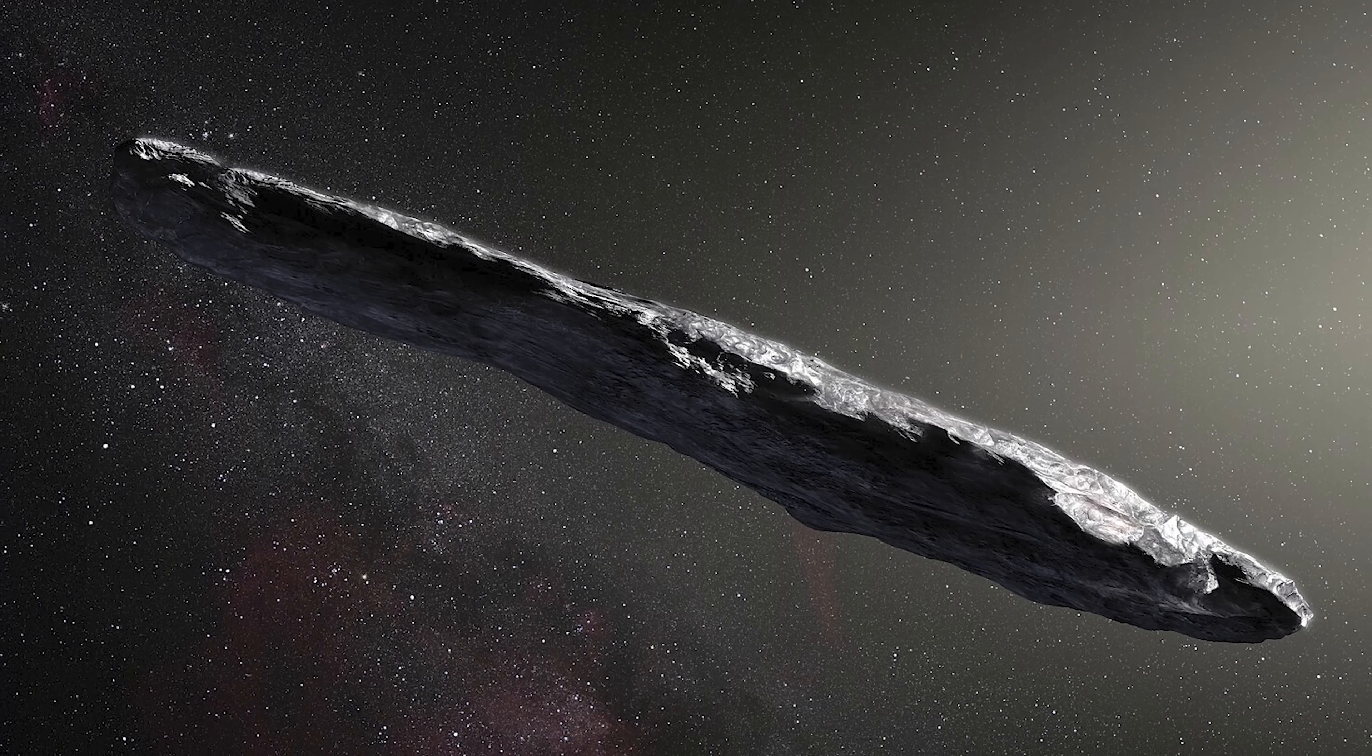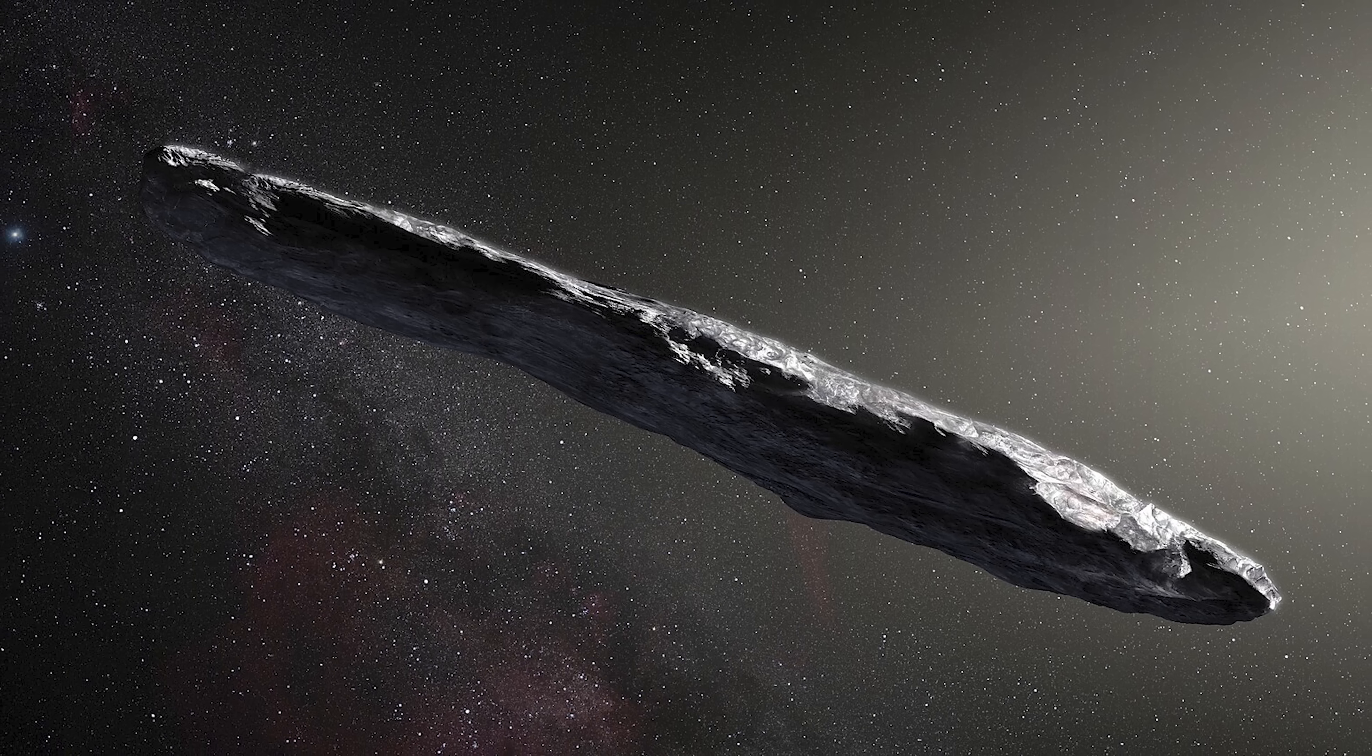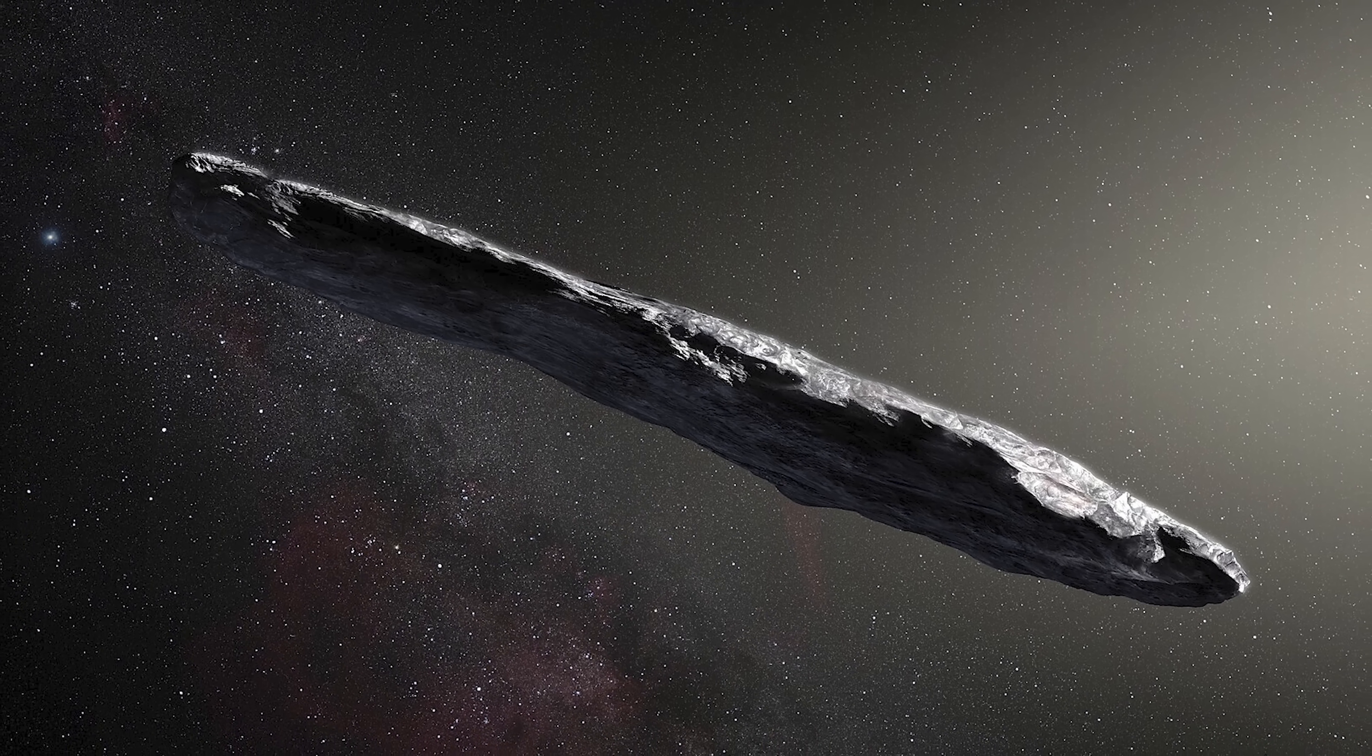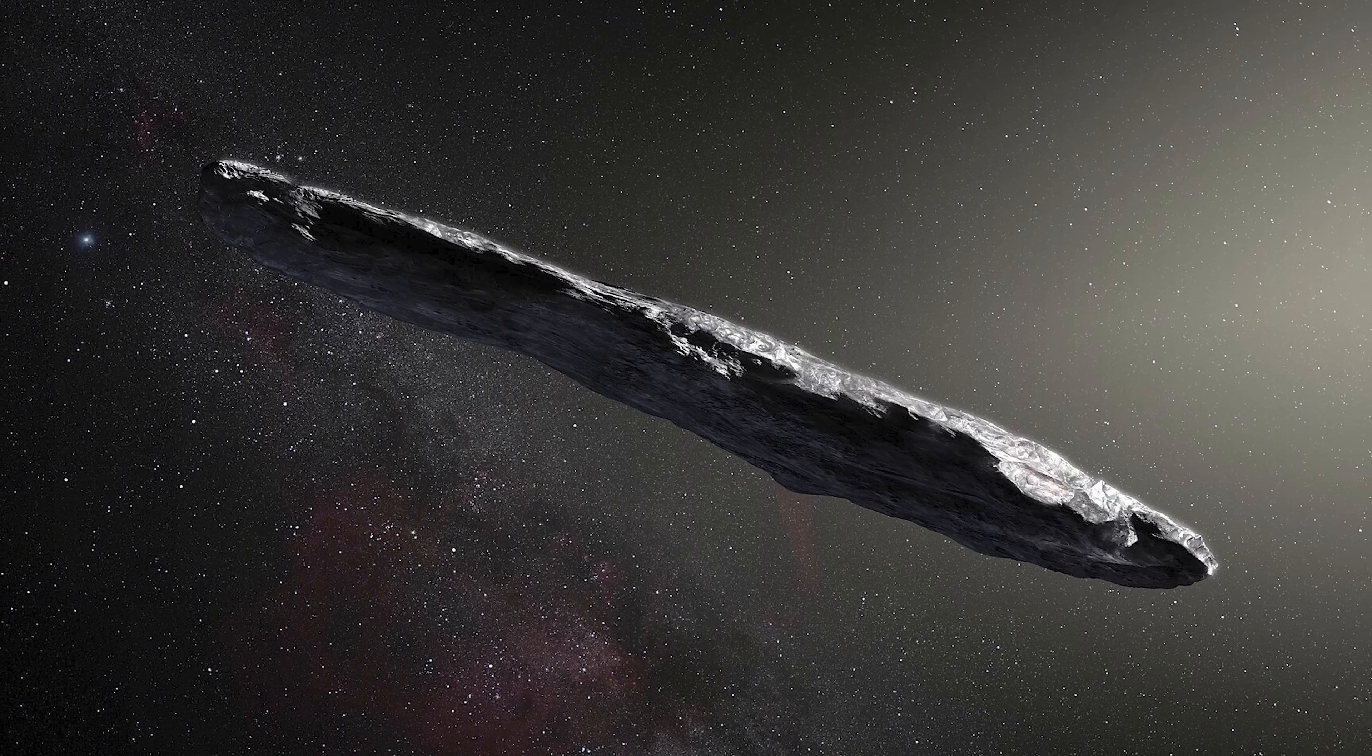However, in the case of the first interstellar object, 1I Oumuamua, scientists eventually ruled out the possibility of it being an artificial object, instead classifying it as an interstellar comet, a remnant planetesimal, very similar to comets in our own solar system.